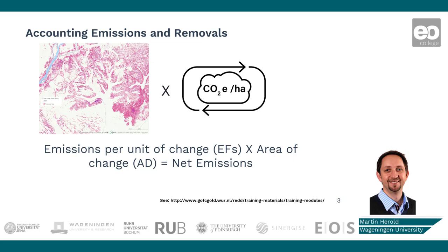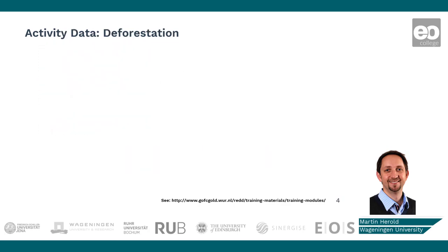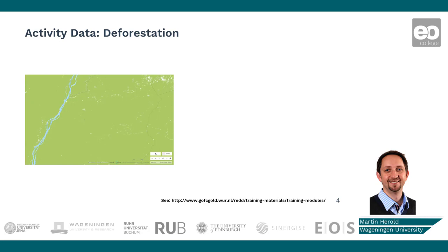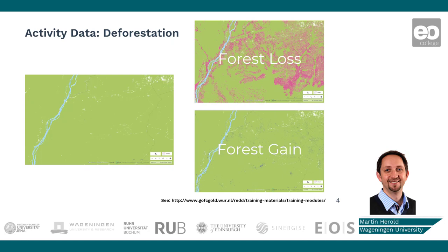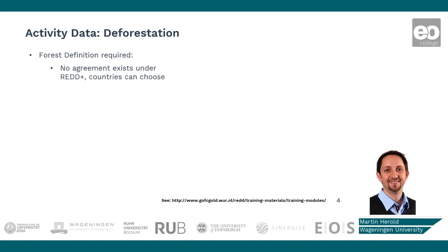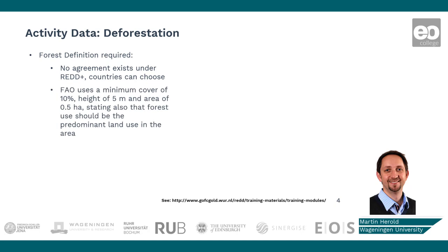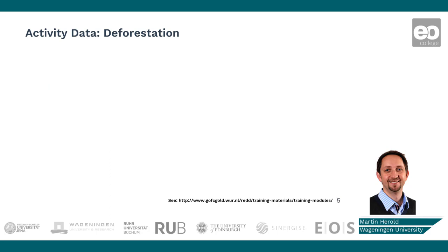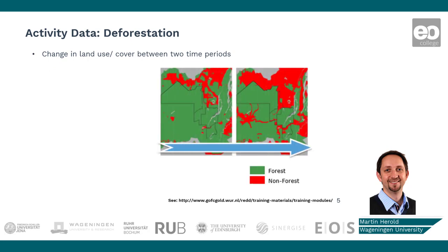Activity data and emission factors can both benefit from Earth observation data. For estimating activity data, you can use Earth observation to map the areas of forest and non-forest, or the changes from deforestation. To do that, you have to define what a forest is. There is no general definition because every country can use their own forest definition. The FAO uses a generic one for their global accounting, but the definition needs to be specified. Using Earth observation data, you would then derive the areas and the transitions between, for example, forest and non-forest.